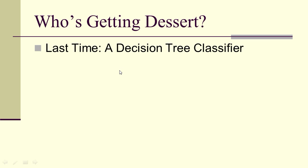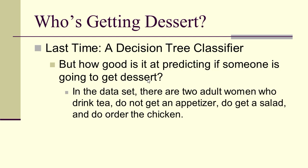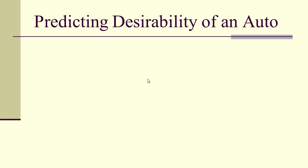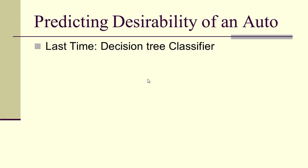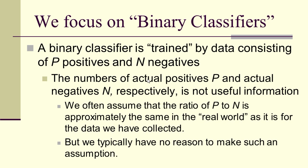Last time we looked at the who's getting dessert decision tree classifier, but how good was it? In the actual data set, there are two adult women who drink tea, do not get an appetizer, do get a salad, do get chicken — one gets dessert, the other does not, so one gets a false positive or a false negative. Predicting the desirability of an automobile was also a decision tree classifier, but again, how good was it? We're going to focus on binary classifiers.